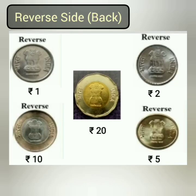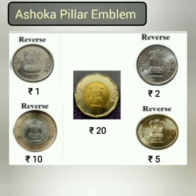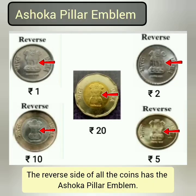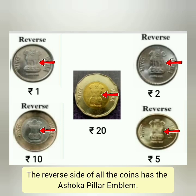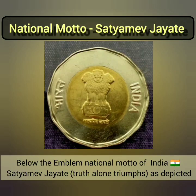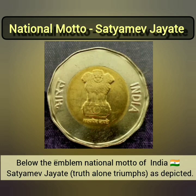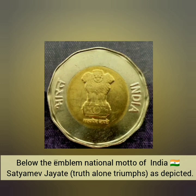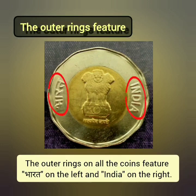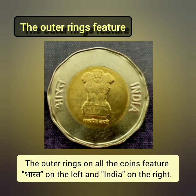Reverse side of the coins: the Ashoka Pillar Emblem appears on the reverse side of all the coins. Below the emblem, the national motto of India, Satyameva Jayate — 'truth alone triumphs' — is depicted. The outer rings on all the coins feature 'Bharat' on the left and 'India' on the right.